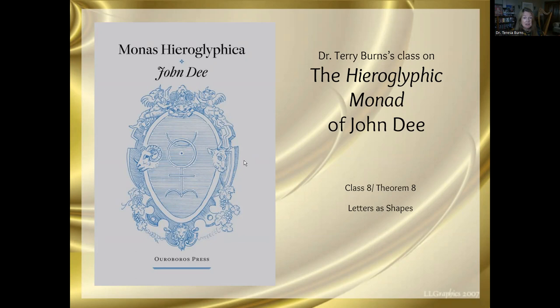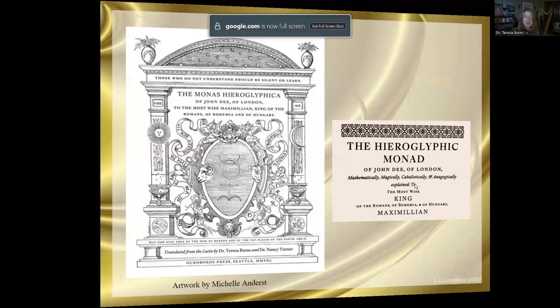So class eight theorem eight, we're going to talk about letters as shapes, knowing that Dee considers the three sacred alphabets and says in his letter to Maximilian that he considers the three sacred alphabets, Hebrew, Greek, and Latin.